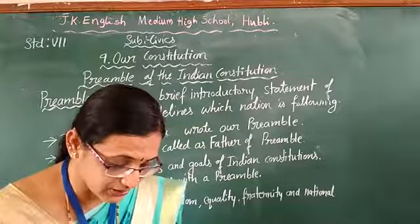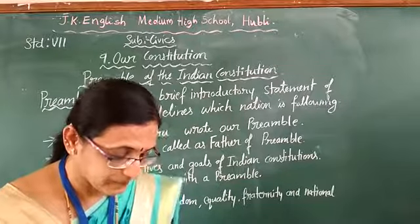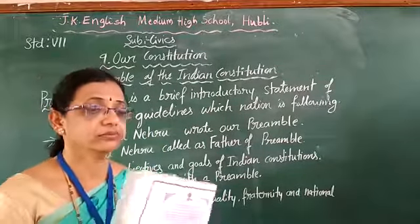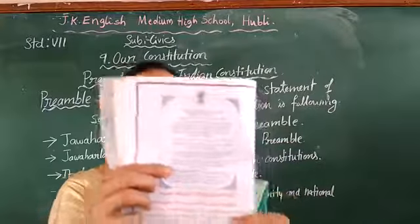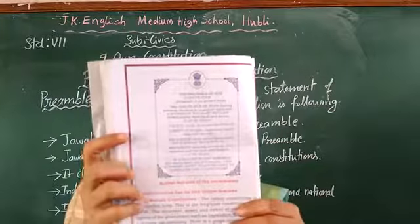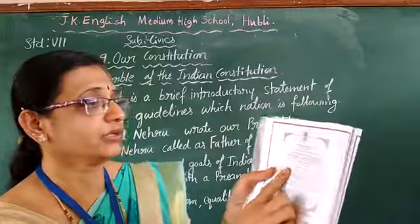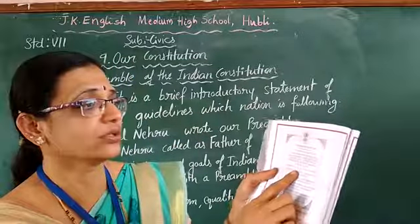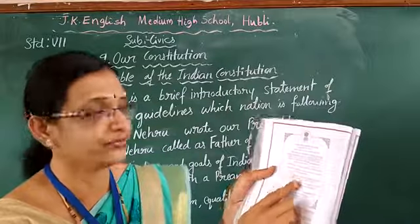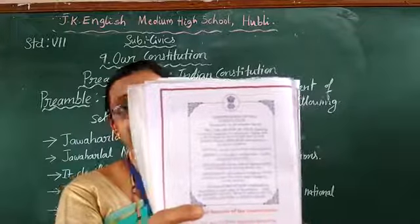The preamble is given in your textbook. I will show you, children. See here — like this way, in the preamble it is there. Can you see? All these things I wrote out — justice, social, economic, political, liberty meaning freedom, equality — all these things are there, children. You can see.